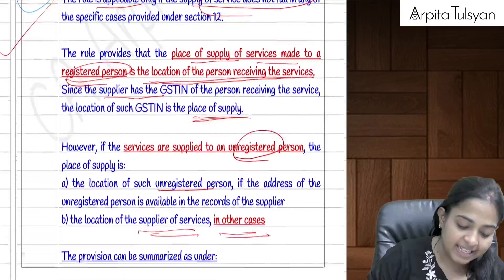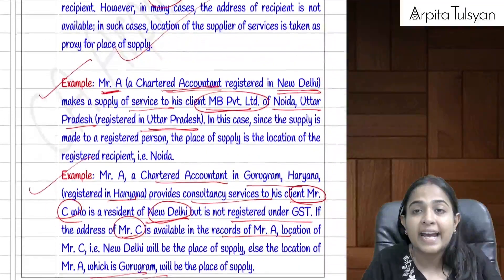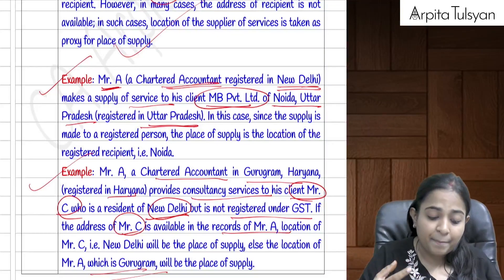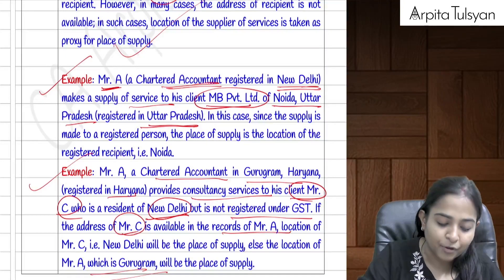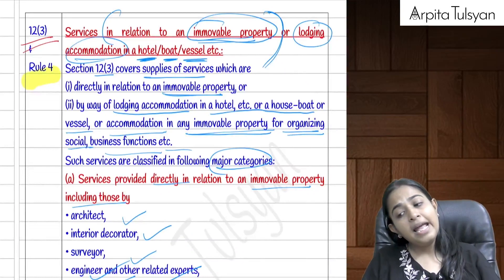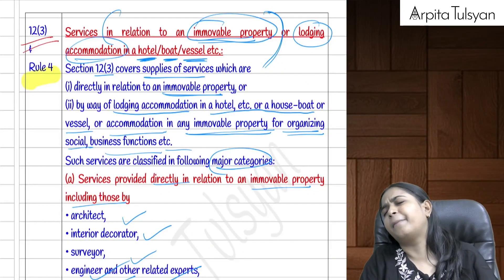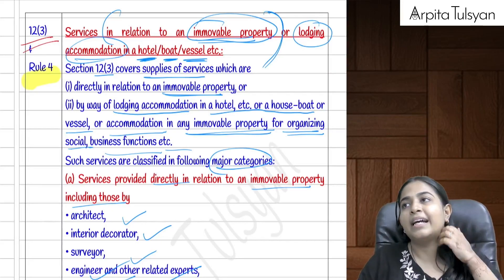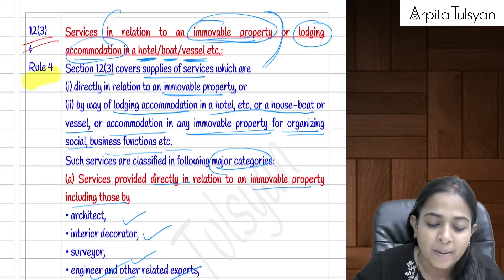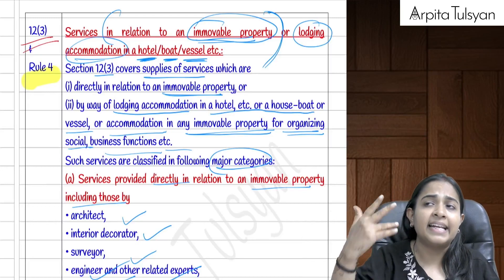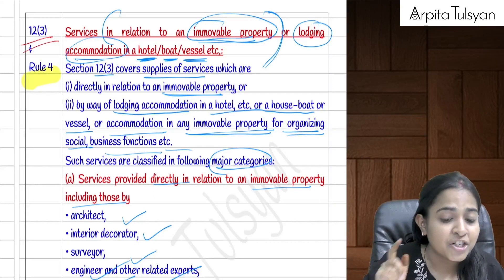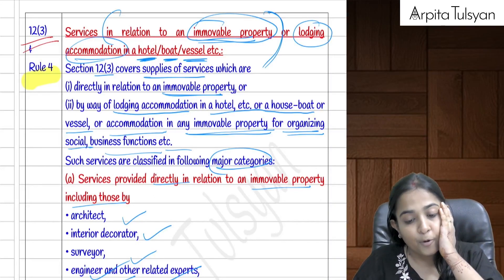The principle under Section 12(2) is that wherever possible, the location of the recipient is kept as the place of supply — consistent with GST being a destination-based consumption tax. Section 12(3), read with Rule 4 of the IGST Rules, is very important and frequently tested.